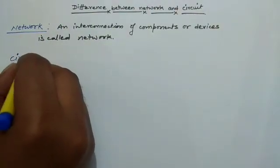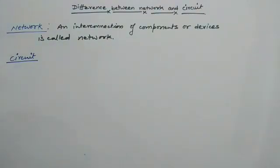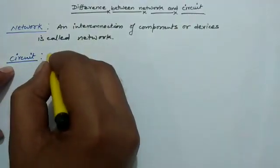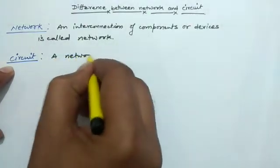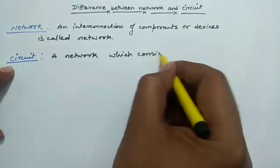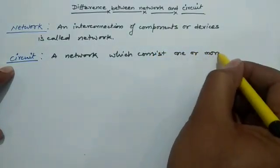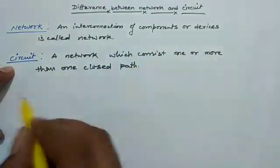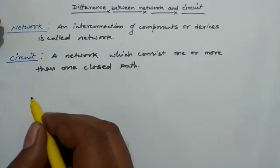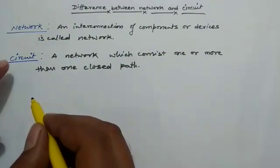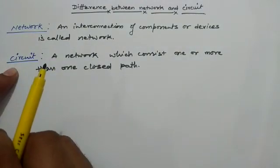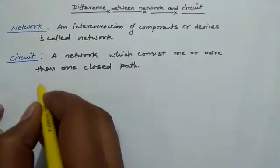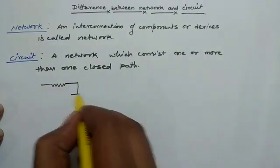So now, what is the circuit? Circuit is also a special type of network. It means a network which consists of one or more than one closed path. In a network, it is not compulsory that there exists a closed path, but in a circuit, there must exist closed paths. Let's take some examples so the picture will be more clear.